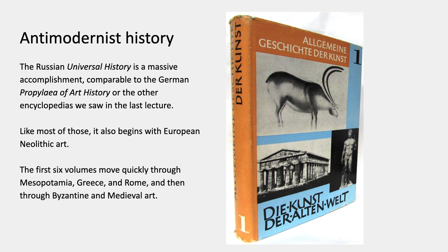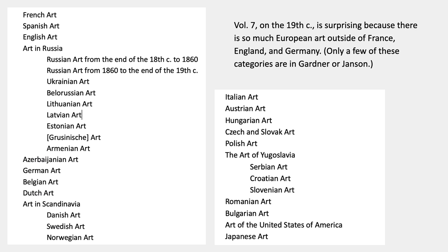It's a massive accomplishment, comparable in volume to the German Propyläen art history that I introduced in the last lecture. And like most of those multi-volume histories of art, which is also quite like an encyclopedia, it begins back in the Neolithic. The first six volumes move really quickly through Mesopotamia, Greece, Rome, and then through Byzantine medieval art, following also the German model. I'd skip on to volume seven on the 19th century.